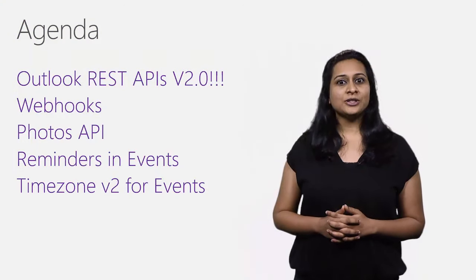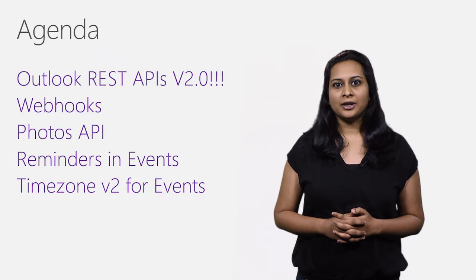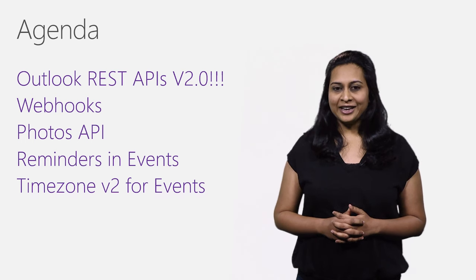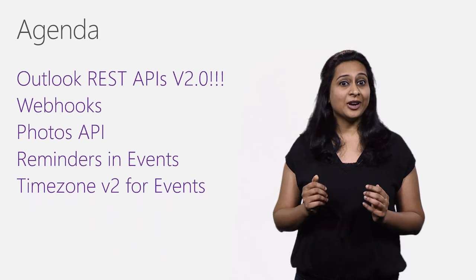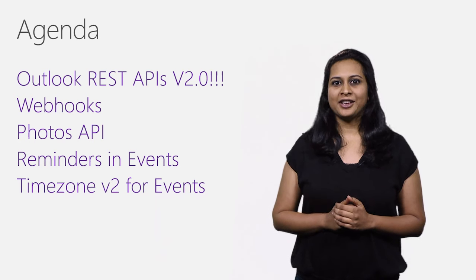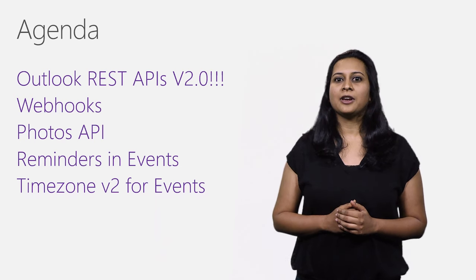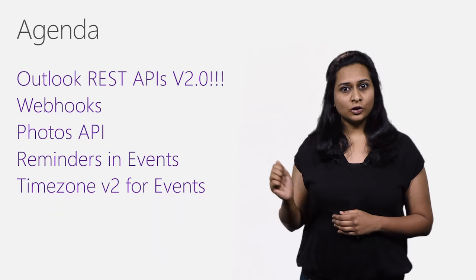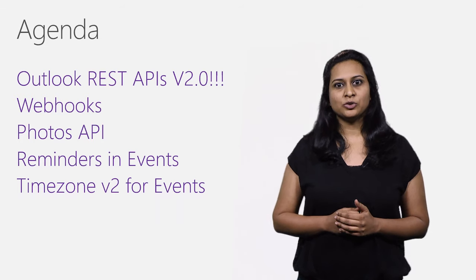We introduced the Outlook Mail, Calendar, and Contacts API for general availability a year ago. Today, we are announcing the V2 endpoint with some great features. We will look at some key updates we have added to this endpoint, like Webhooks, Photos API, Reminders, and Timezone V2.